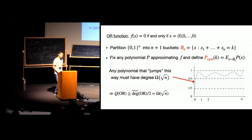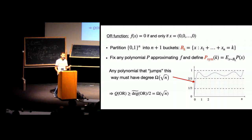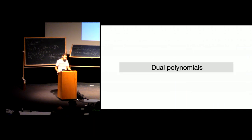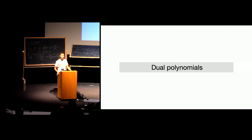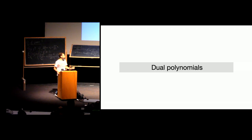Sometimes when you reduce the number of variables, you lose too much and cannot get an optimal lower bound. A second approach — studied more recently — is the dual polynomials method, which relies on LP duality rather than reducing variables.